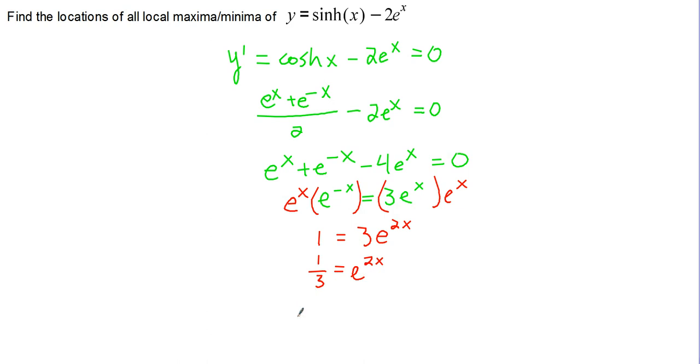And take the natural log of both sides, gives us natural log of 1 third equals natural log of e to the 2x, or just 2x. Probably better to rewrite natural log of 1 third as natural log of 1 minus natural log of 3, so that we can get rid of the natural log of 1 part. Natural log of 1 is 0, and this is just negative natural log of 3. And when we divide by 2, we get x equals negative 1 half natural log of 3.